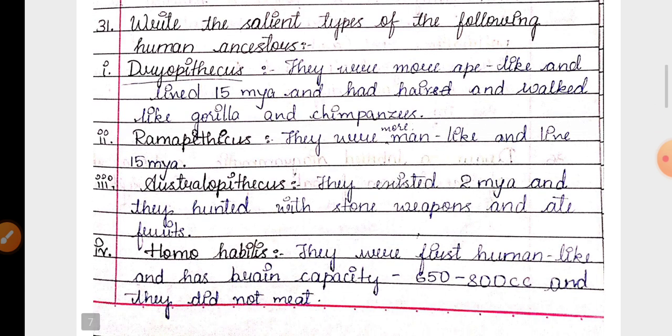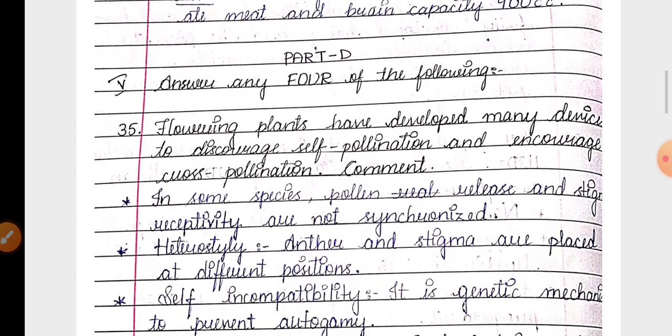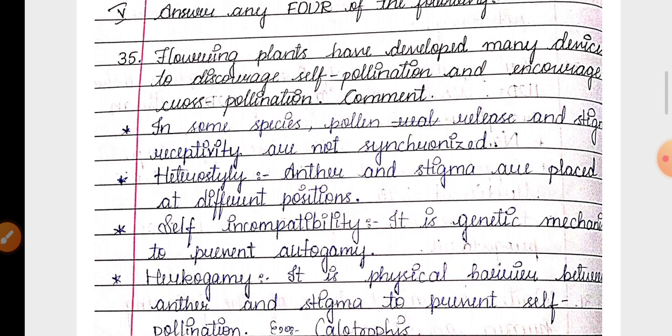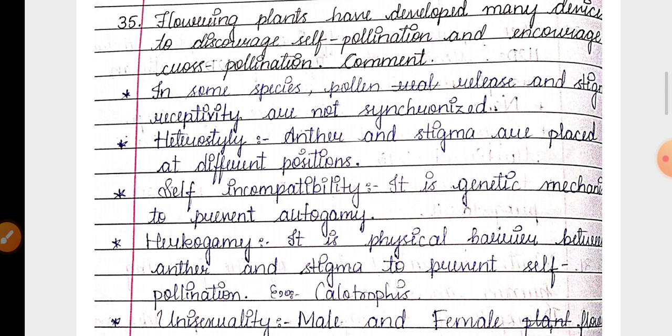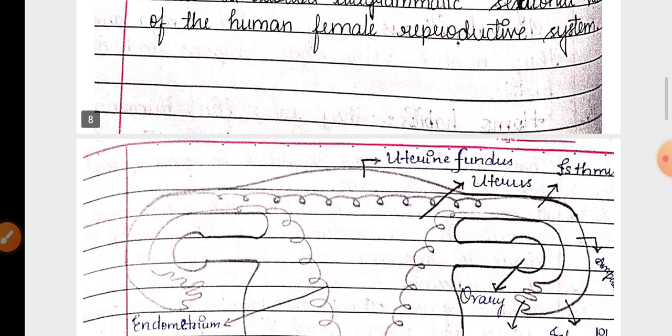Next question is from evolution chapter about the features of human ancestors. Then in part D, 5 marks, last question 35th question is about the devices to discourage self-pollination and encourage cross-pollination, also called as outbreeding devices.